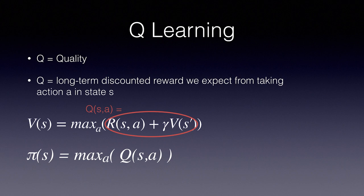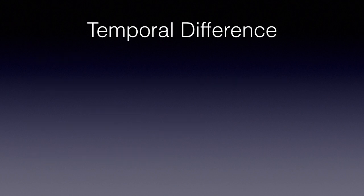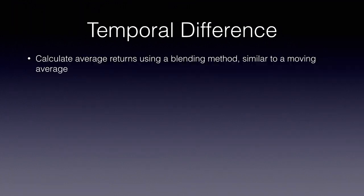In order to understand the queue learning algorithm, I'm going to do a brief review of temporal difference, which is the algorithm we use to update our queue table at each step. Alright, so how can we calculate returns without storing an entire episode and iterating backwards as we did in Monte Carlo? Instead, we can calculate the average return for a state using a blending method. This is very similar to a moving average. It updates gradually.